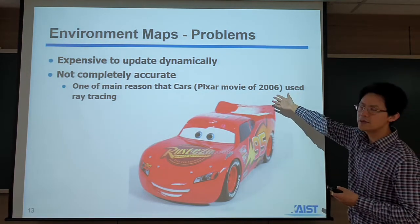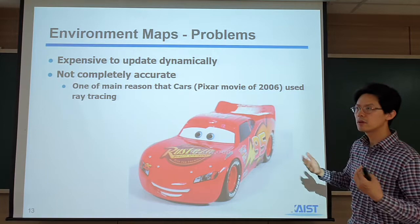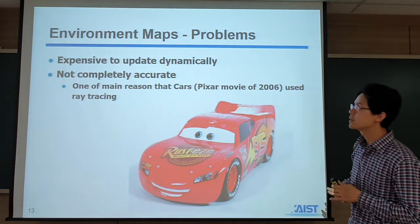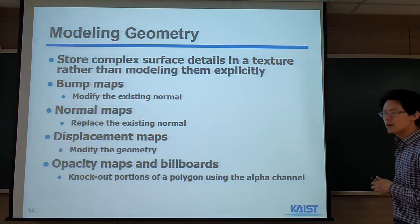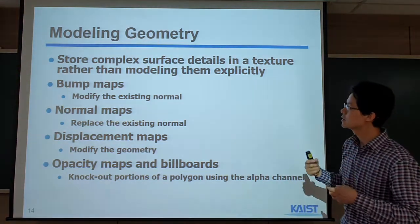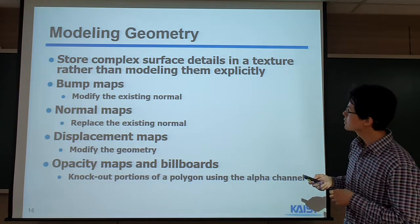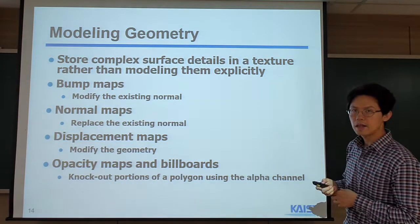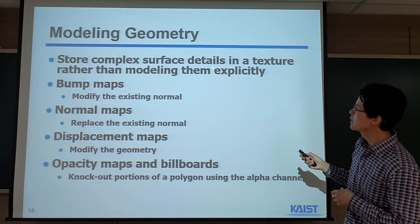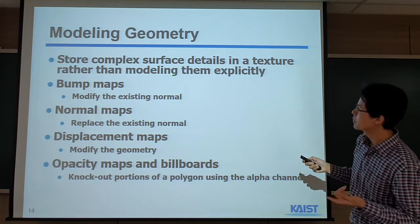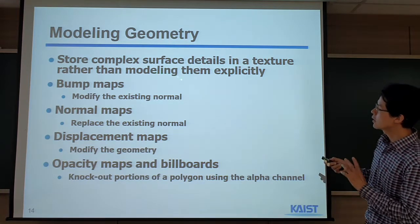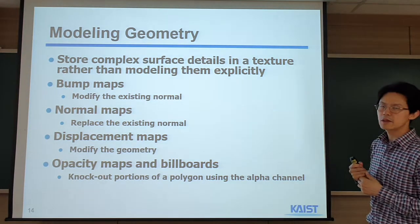Since then, ray tracing has been getting more popular, and in some of the recent movies, they're using ray tracing in a lot of cases. I talked about using texture mapping for supporting lighting effects. We can also use texture mapping for modeling geometry. We store the complex surface detail in the texture rather than adding triangles.